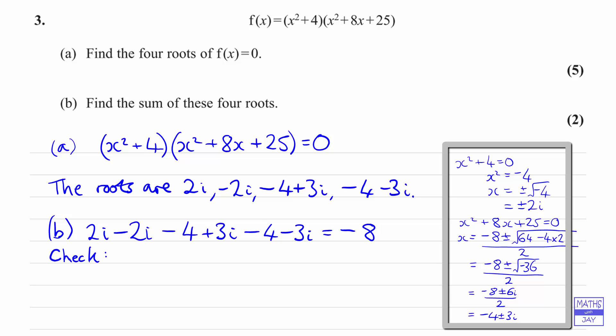So you'll get terms in powers of x starting from x to the fourth down to a constant term. Now we're only interested in finding the sum of the four roots, so what we could do is think about in general terms if we had a quartic equation, where the sum of the four roots would pop up. So if we had a look at writing down the equation in the form of, let's call the roots α, β, γ, and δ. If we write it down as (x - α)(x - β)(x - γ)(x - δ).